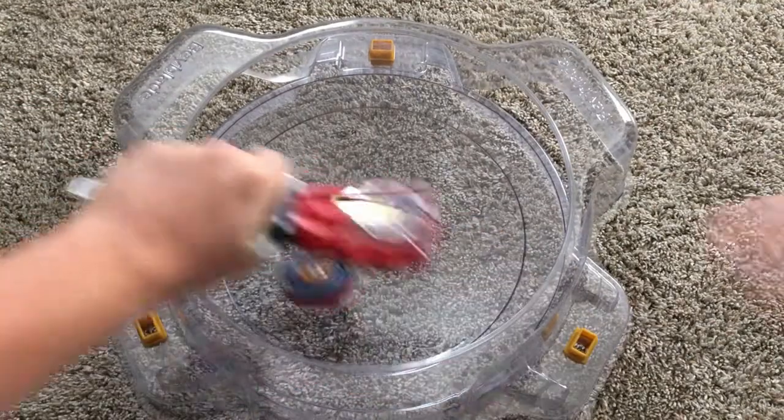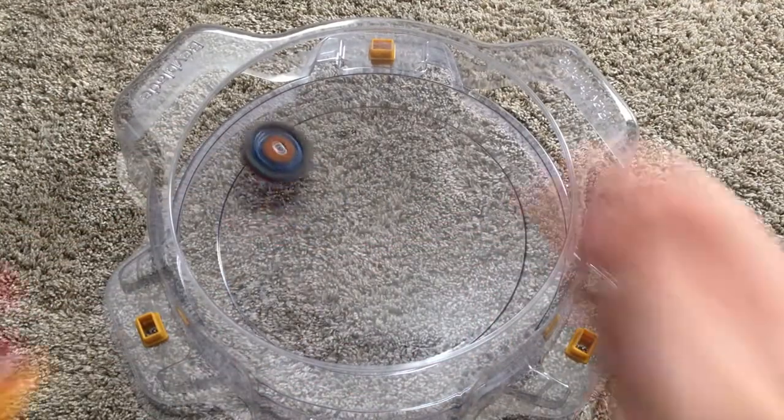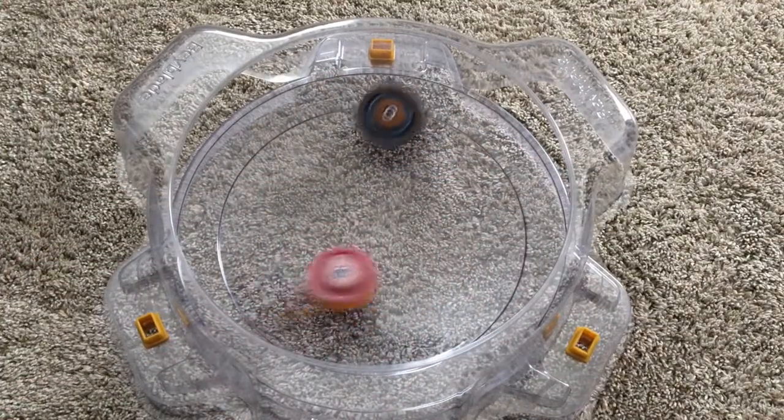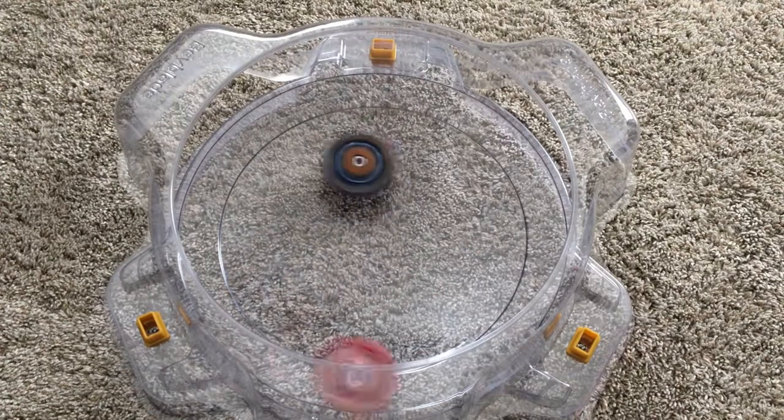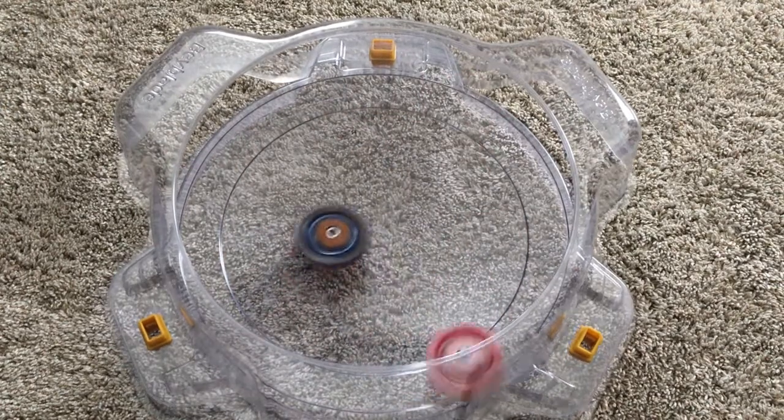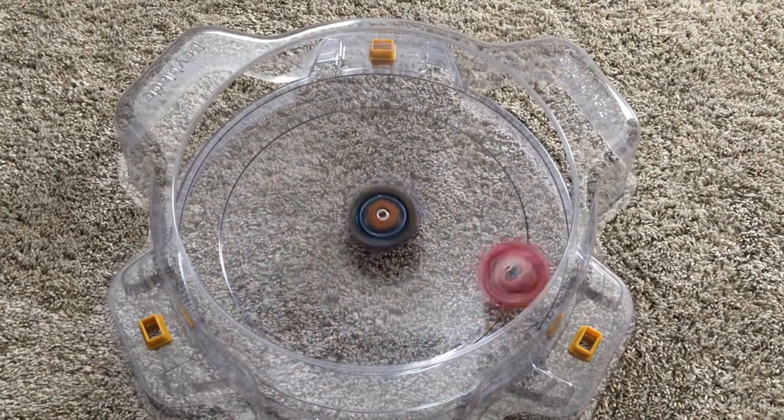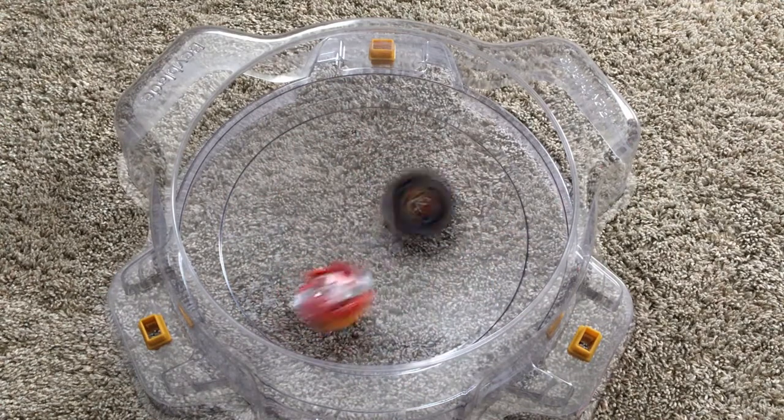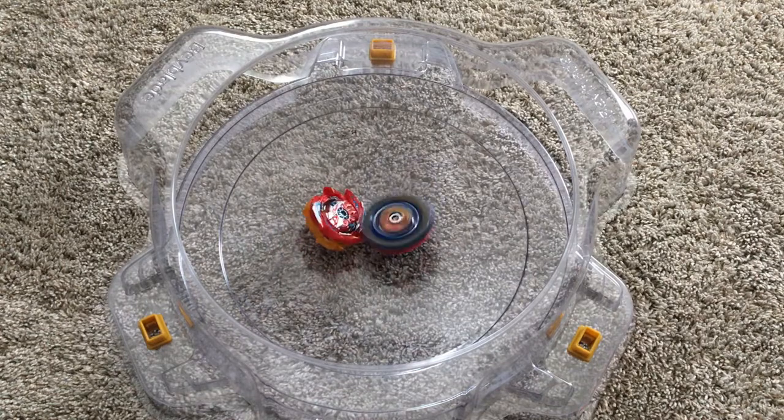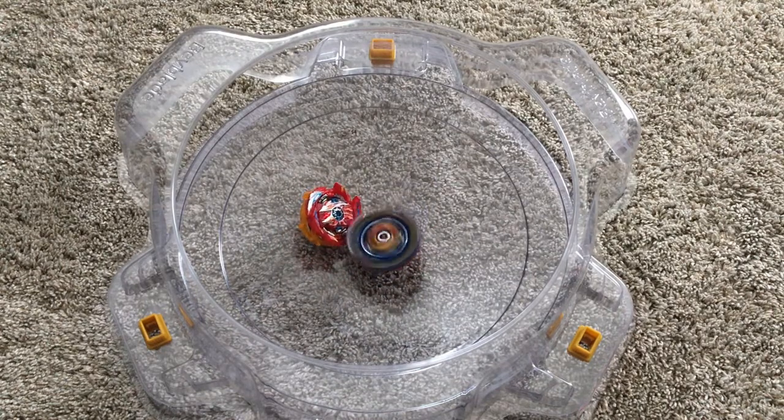Round 8. Let it rip. Again, very fierce attacks from both beyblades. Looks like Valkyrie is taking the center while Hyperion is trying to get in these flower pattern attacks. Gonna come down to stamina. And a spin finish for Brave Valkyrie, making the score 5-3.